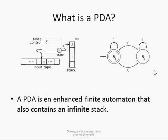If we add one stack to this FA and make a little change in our delta or transition function, then we can make our PDA. So in the case of PDA we will consider not only the input symbol and the current state.